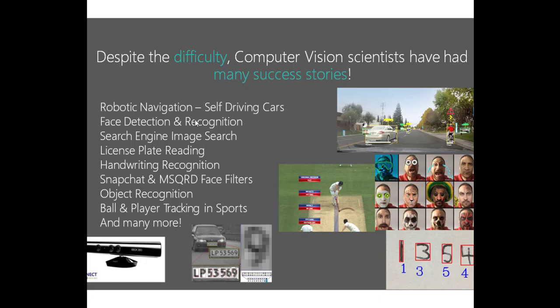Computer vision is used today in robotic navigation, for example self-driving cars, face detection and recognition, image search in search engines, and license plate reading — you can see the image. Also handwriting recognition.